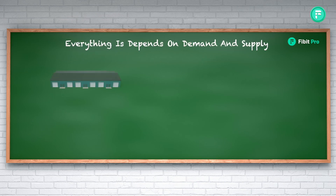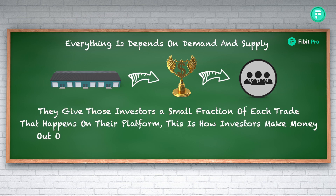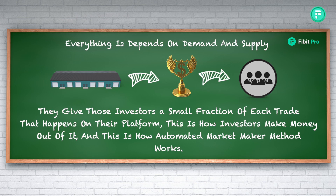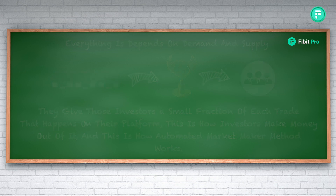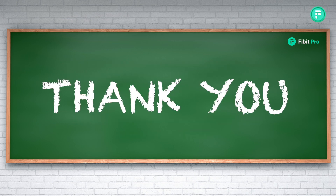You should also be aware that the liquidity pool rewards investors — those who initially invested their money in the liquidity pool. The platform gives those investors a small fraction of each trade that happens. This is how investors make money from it, and this is how the automated market maker method works. We sincerely hope you learned a lot from this video on automated market makers. Thank you so much and see you in the next video.